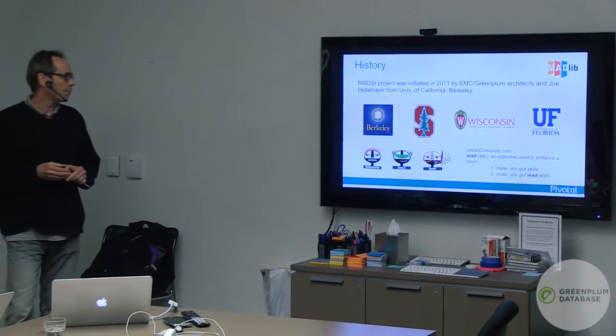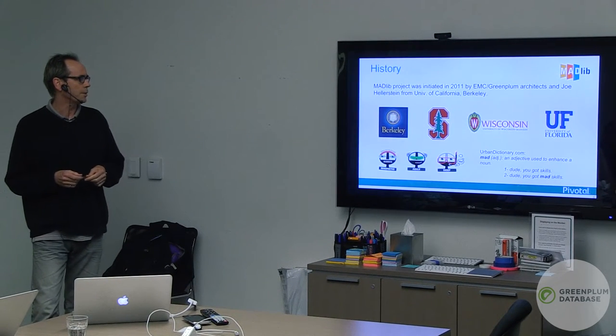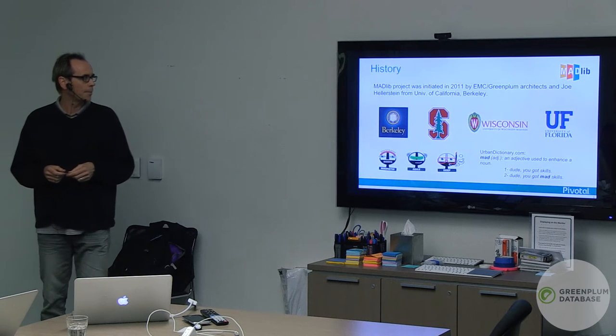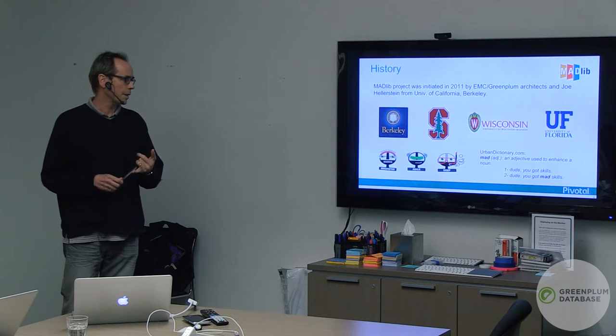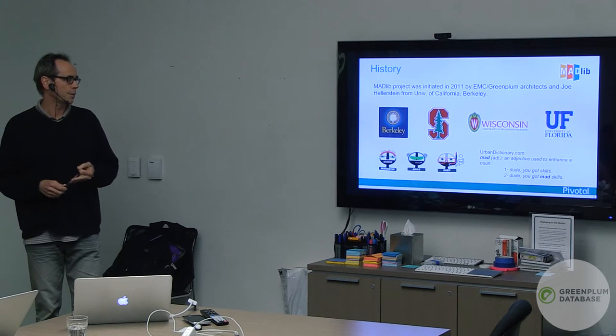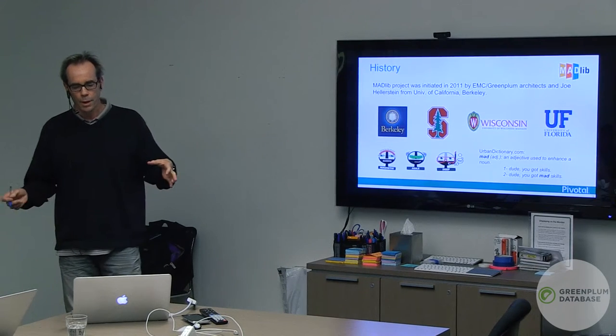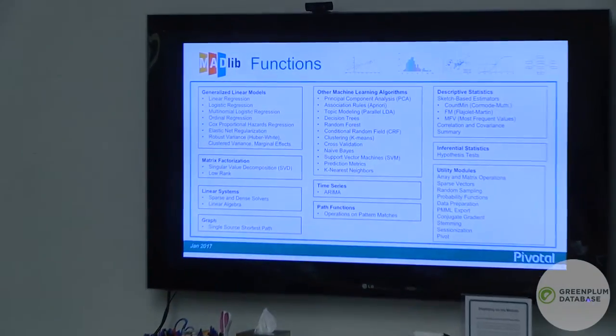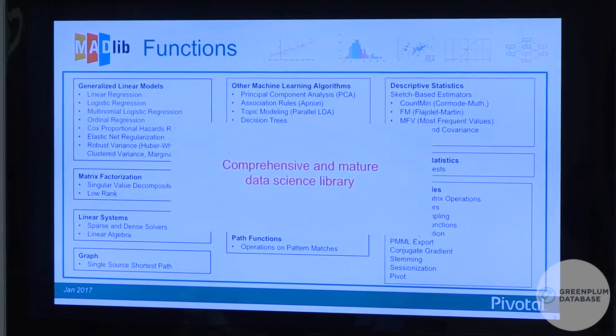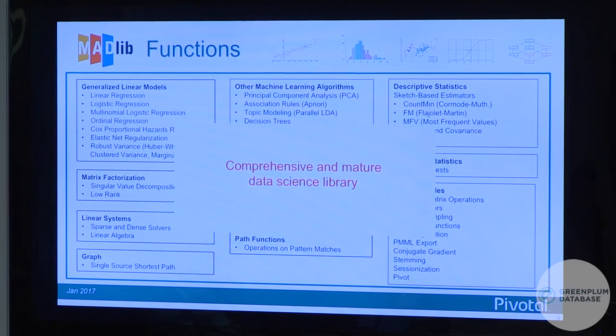A short history lesson: Apache Madlib came out of work done at UC Berkeley by Joe Hellerstein, together with architects from EMC and Greenplum, in 2011. Since then there's been good collaboration between Greenplum and Pivotal as well as the academic community — Stanford University, University of Wisconsin-Madison, and the University of Florida. This collaboration led to the project we have today. It's always been open source but in the last year or so it's been an Apache Software Foundation project. It's a very comprehensive library developed over six years covering a whole range of practical real-world machine learning use cases.